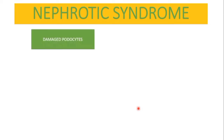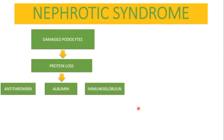Now let's see the pathophysiology of nephrotic syndrome. The main problem here is damage to the podocytes or epithelial cells, which causes massive protein loss. Some important proteins that are lost include antithrombin 3. Thrombin forms blood clots and antithrombin prevents clotting — so when antithrombin is lost, there is more thrombin activity and more blood clot formation.